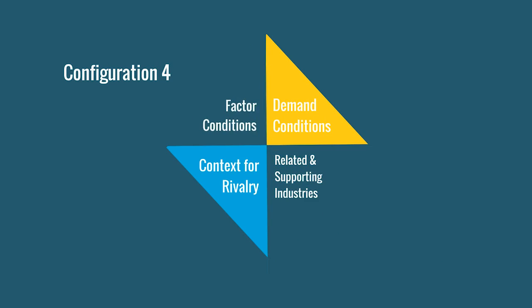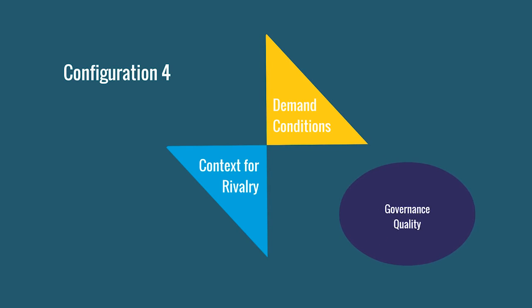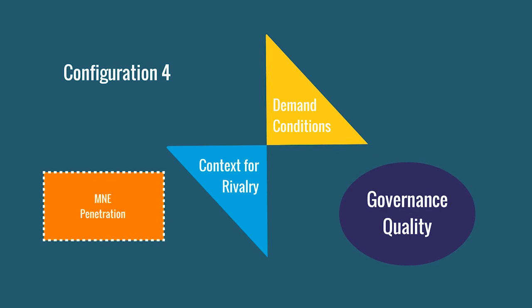Finally, configuration four contains two of the elements of the diamond model, demand conditions and context for rivalry. In addition, it contains low MNE penetration and high governance quality.